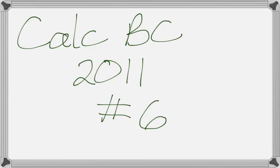This is number 6 from the 2011 BC exam. It is the series question. So what we want to do ultimately in part A is find a series for sine of x squared, but the first part says to just write the first four non-zero terms of the series for sine of x.